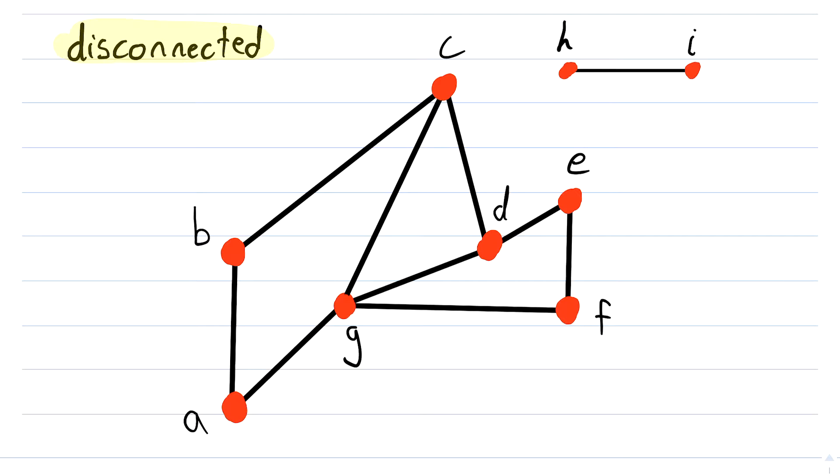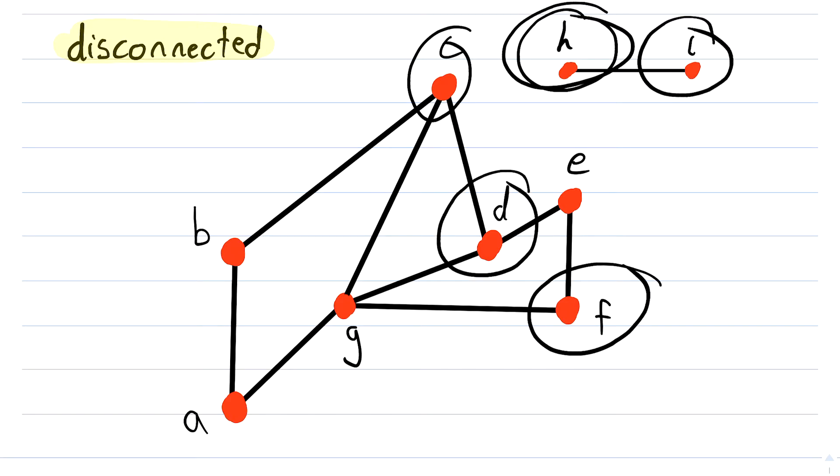So if a graph is not connected, it's disconnected. We know that this graph is disconnected because there does not exist a path from, for example, e to i. Those two vertices are not connected. And if in a graph there exists a pair of vertices that is not connected, then that graph is not connected. Of course, c and h aren't connected, f and h aren't connected, d and i aren't connected, and you see how the problem arises here.